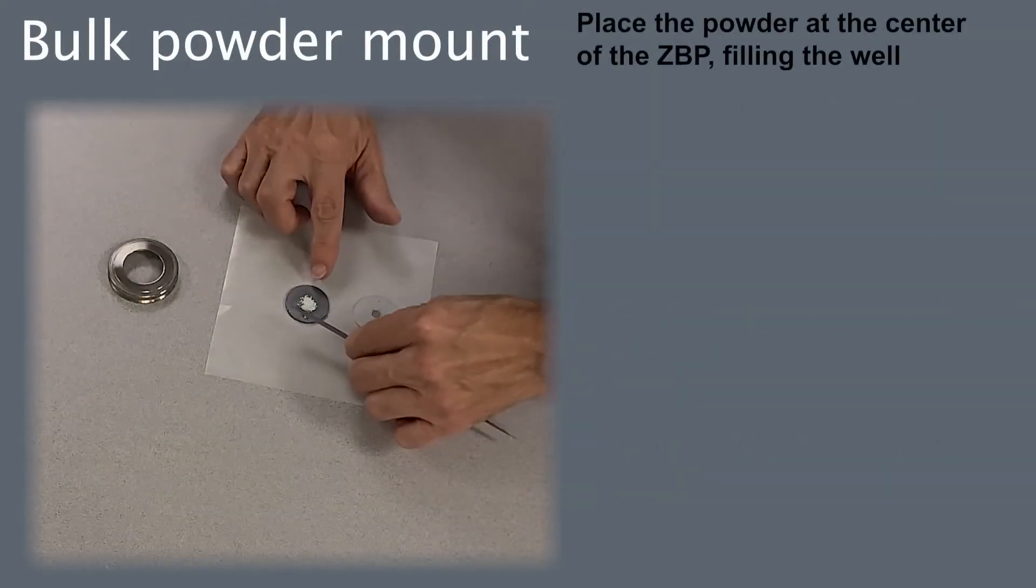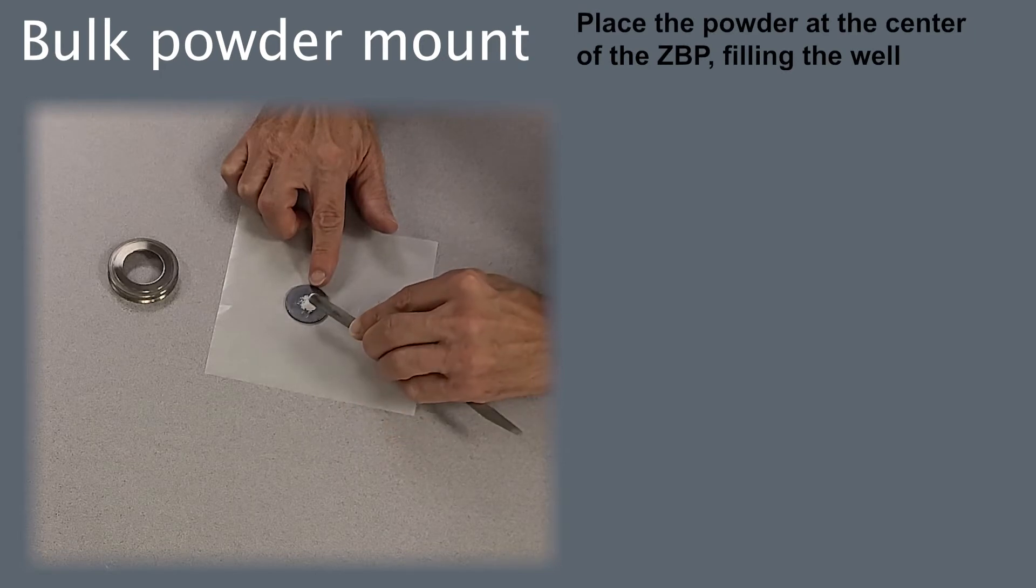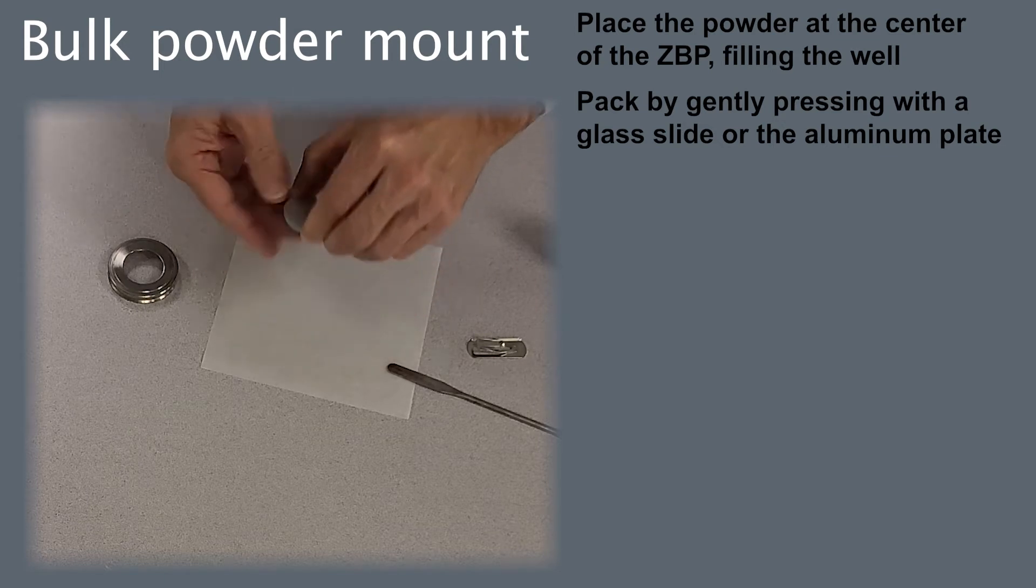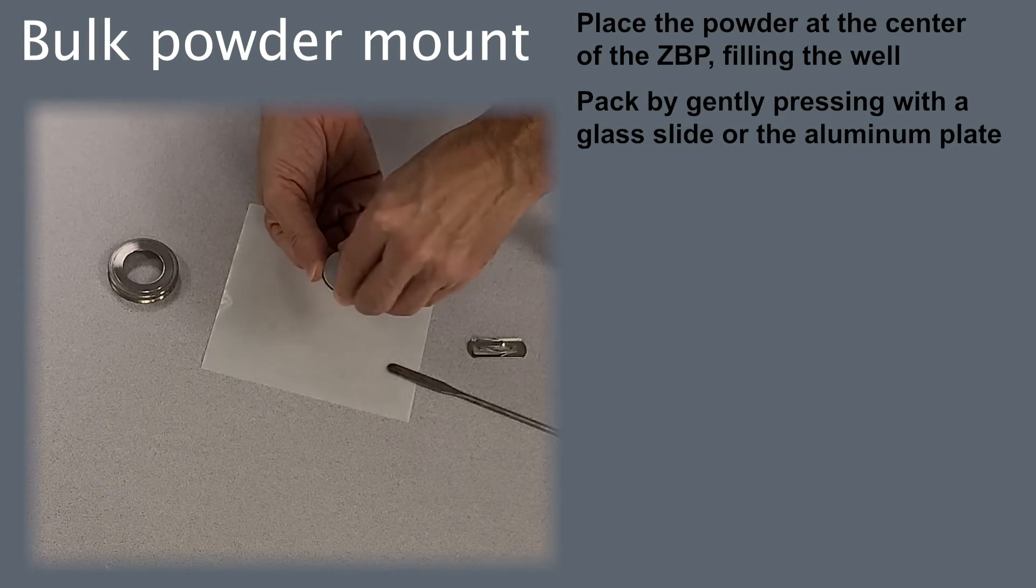To mount a bulk powder, place enough powder at the center of the plate to fill the well. Pack gently, pressing with the glass slides or the aluminum plate.